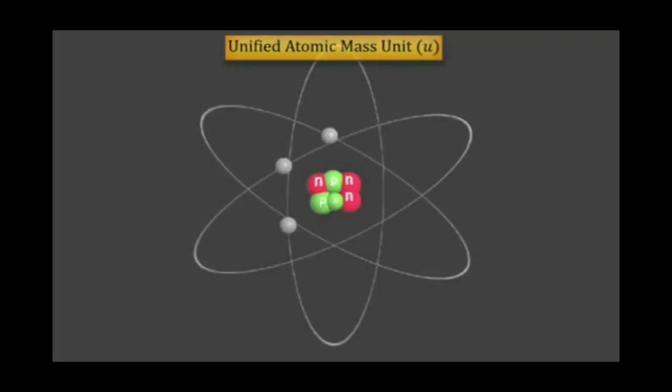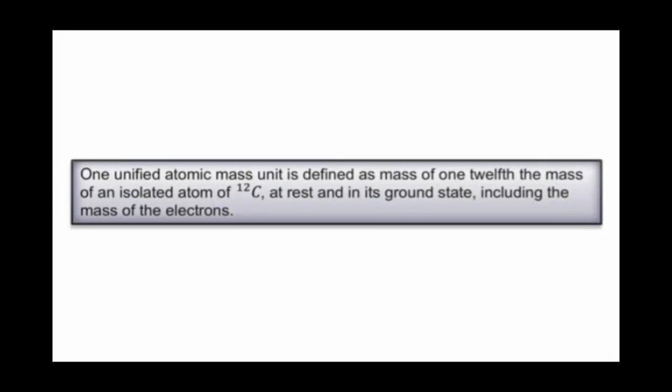One atomic mass unit is defined as the mass of 1 twelfth, the mass of an isolated atom of carbon-12 isotope at rest and in its ground state including the mass of electrons. And the value of 1 AMU is estimated to be 1.66 into 10 to the power minus 27 kilogram.